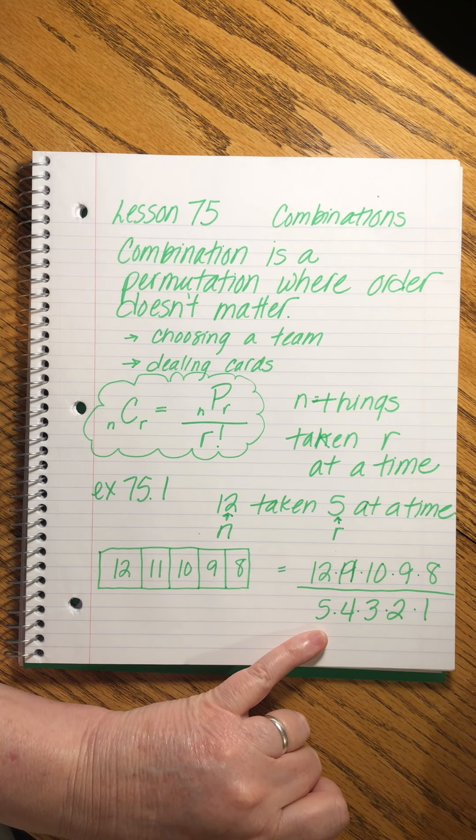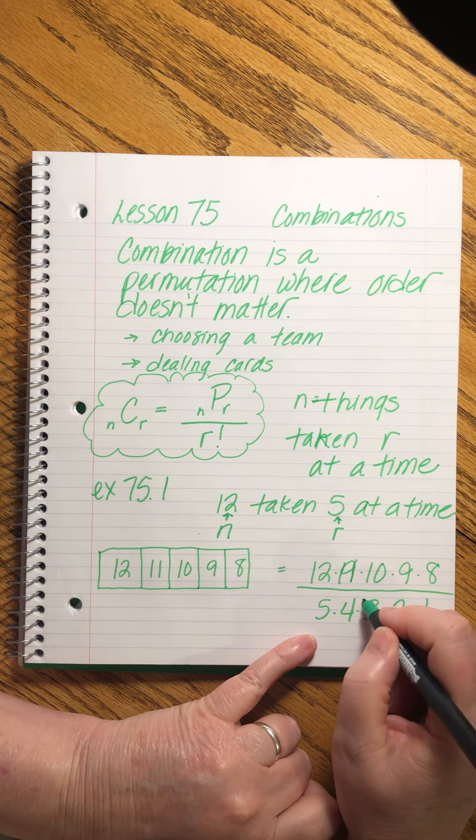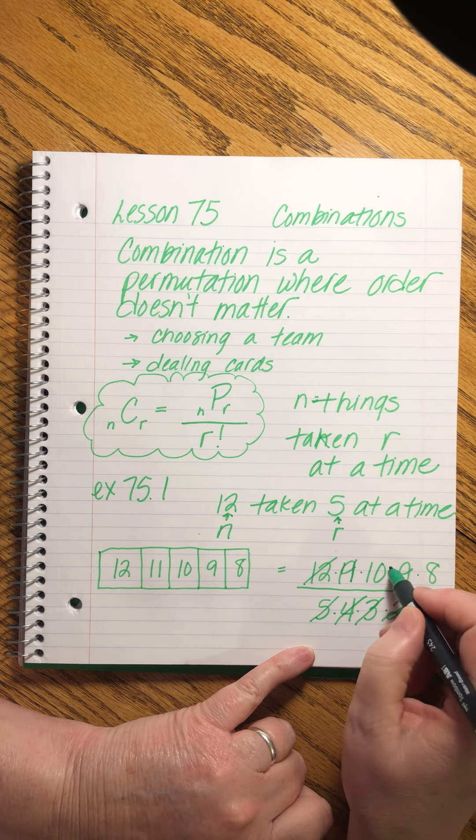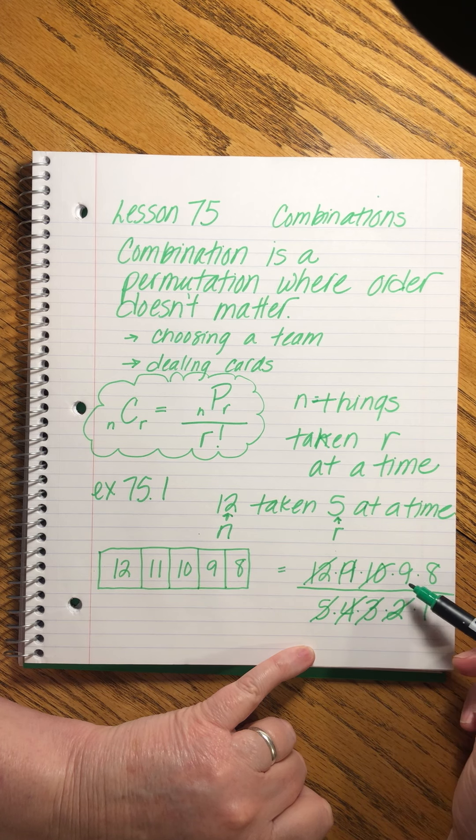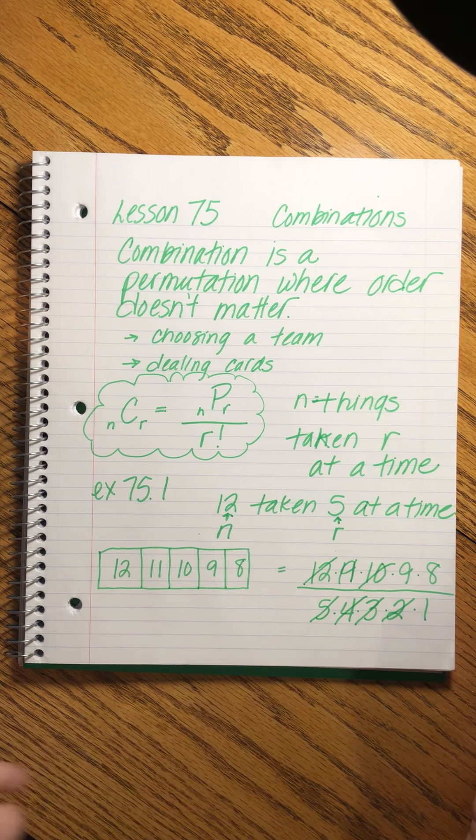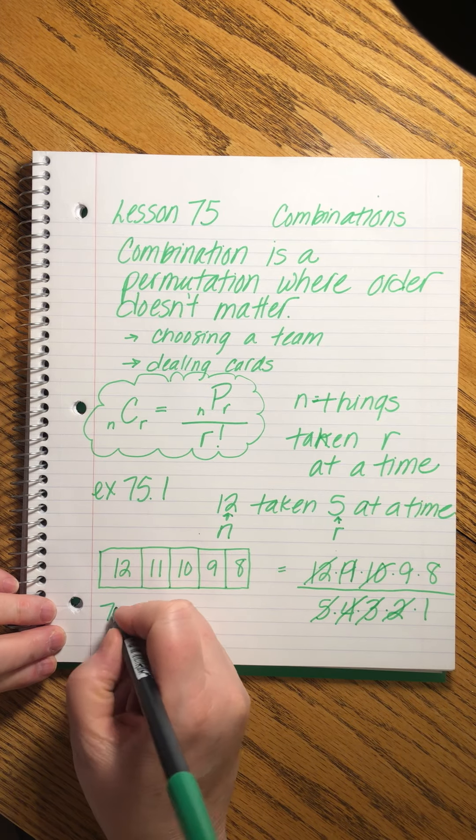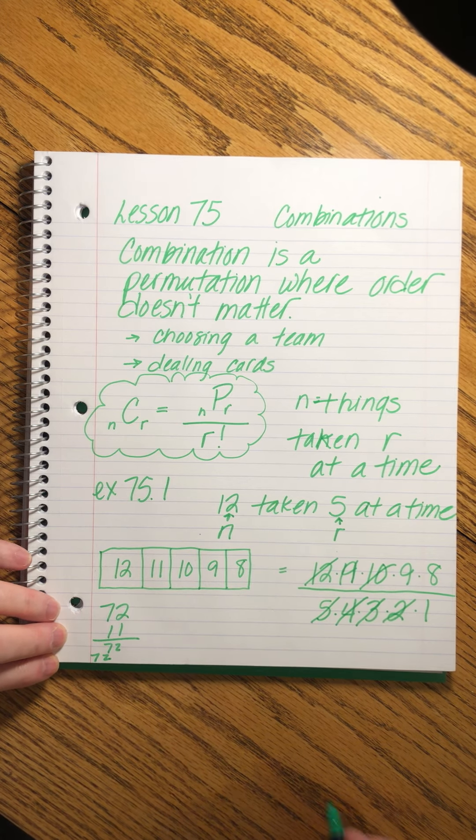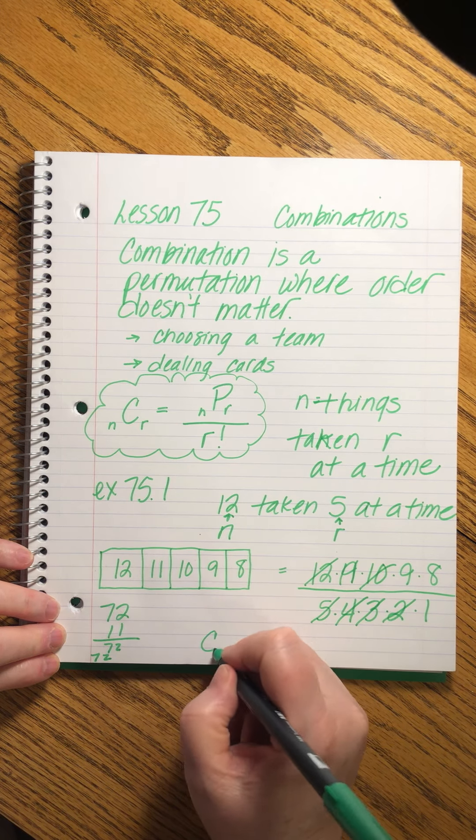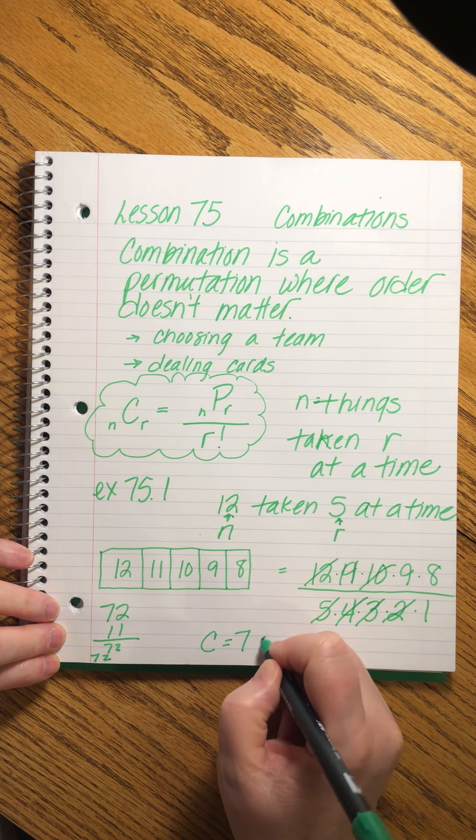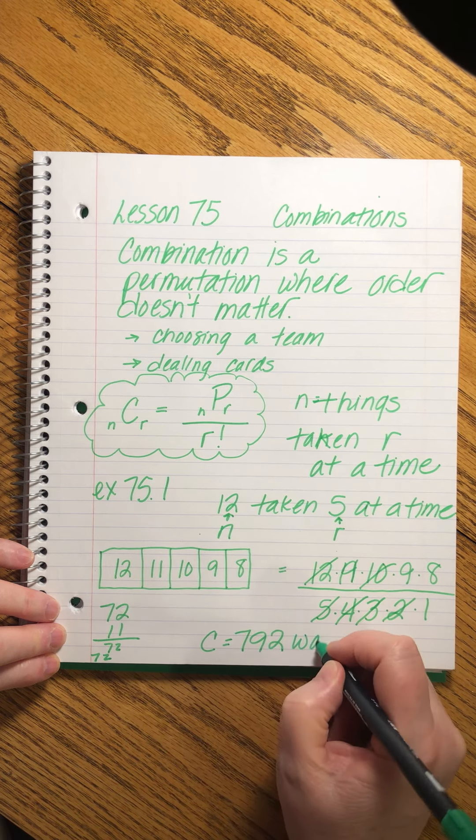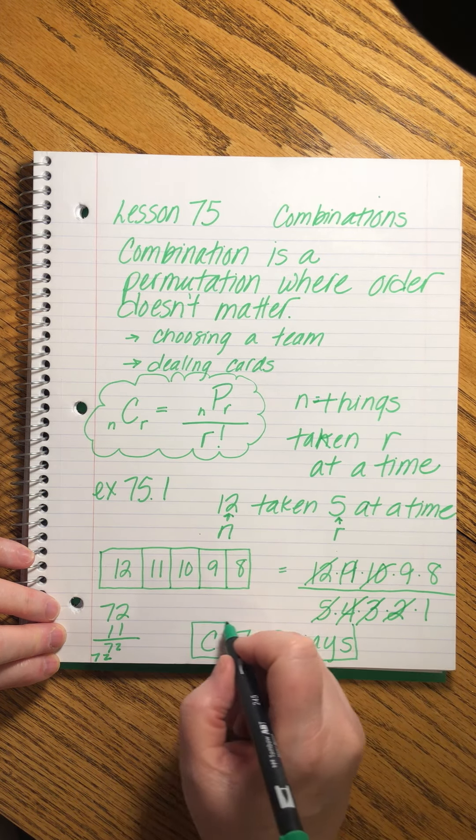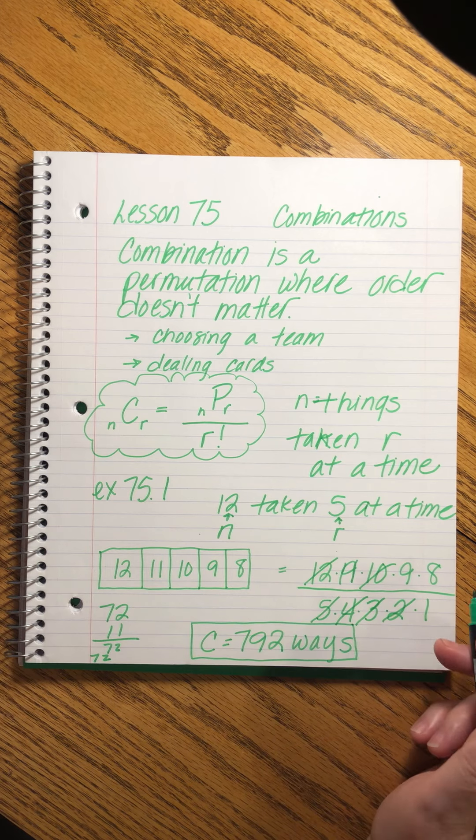So let's see what we can cancel out of this. 4 and 3 against the 12. 5 and 2 against the 10. 11 times... Let's do 11 times 72. That sounds like a fairly easy math problem. So that means the combination equals 792 ways that we can form a committee of 5 out of 12 students. That's the right answer.